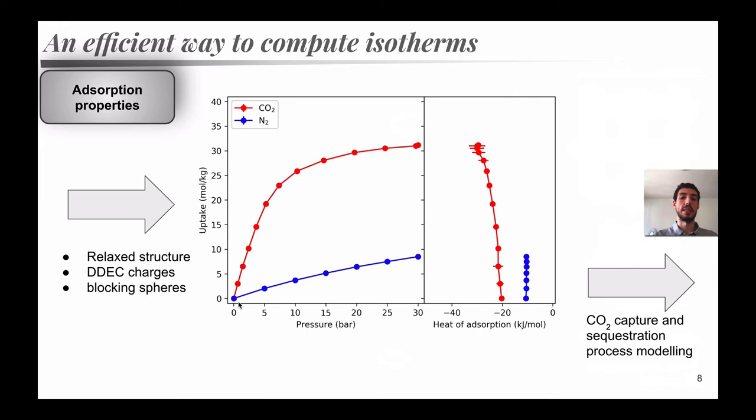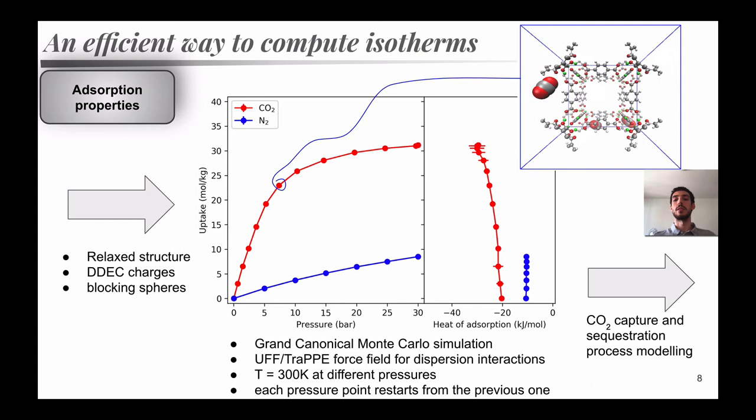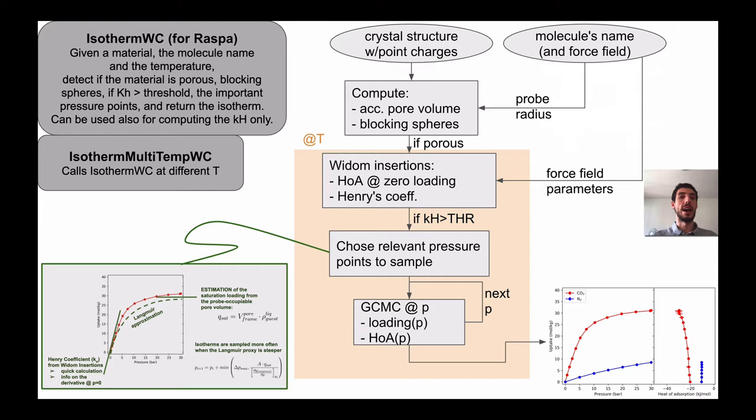We then compute isotherms. Isotherms means for different pressure points compute the CO2 and nitrogen uptake and the heat of absorption, so the average energy of the molecule inside the framework. And for this, we have the grand canonical Monte Carlo simulation, so we use RASPA. And also, we found very convenient to shape our work chain in AIDA, because here there are a lot of operations and logic that we need to take into account. So we have our crystal structure, we compute the accessible pore volume and the blocking spheres. This is something that is often forgotten because we need some logic to do this. So we need to block all these pores that are not accessible to the molecule, because maybe they are connected to narrow channels. So we have to exclude them from the GCMC calculation.